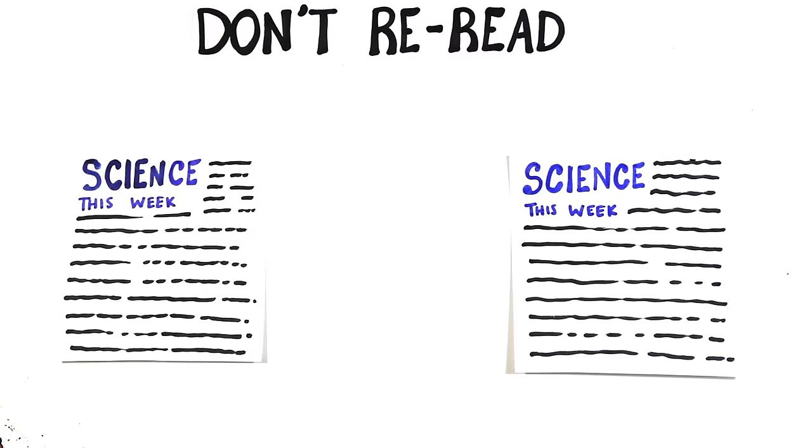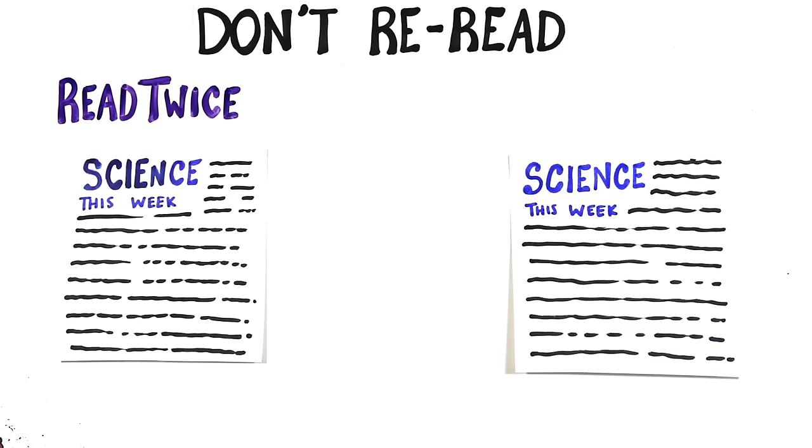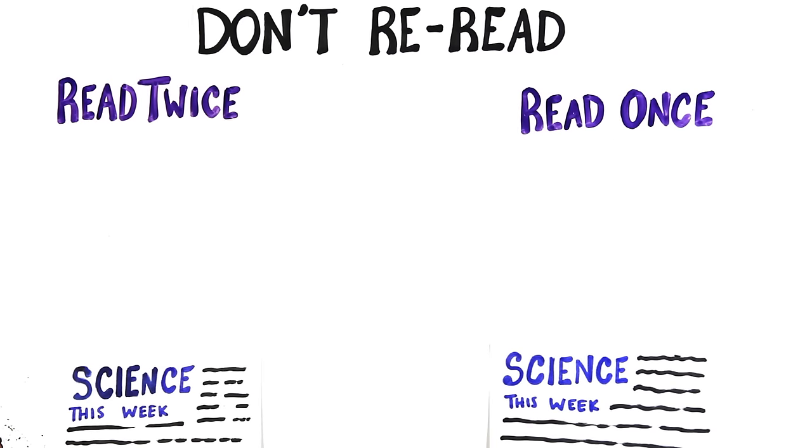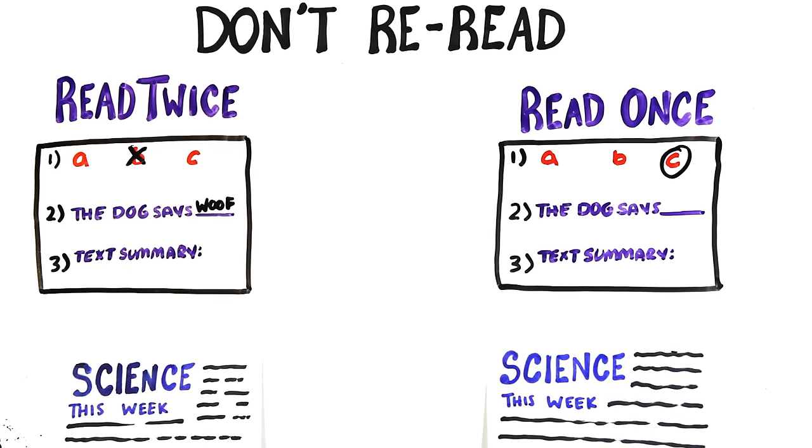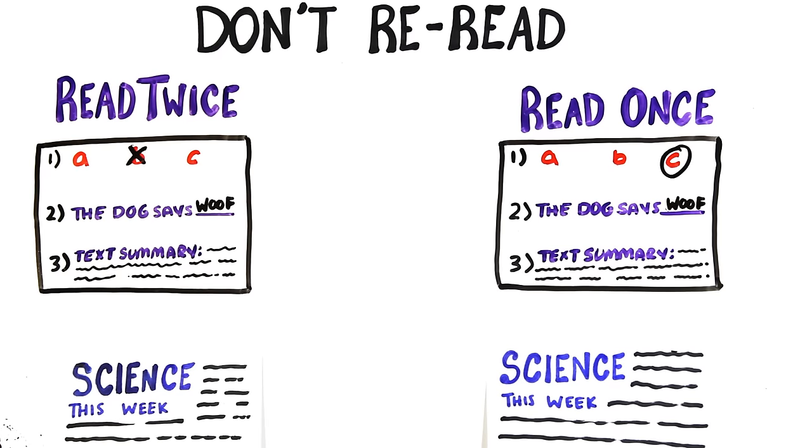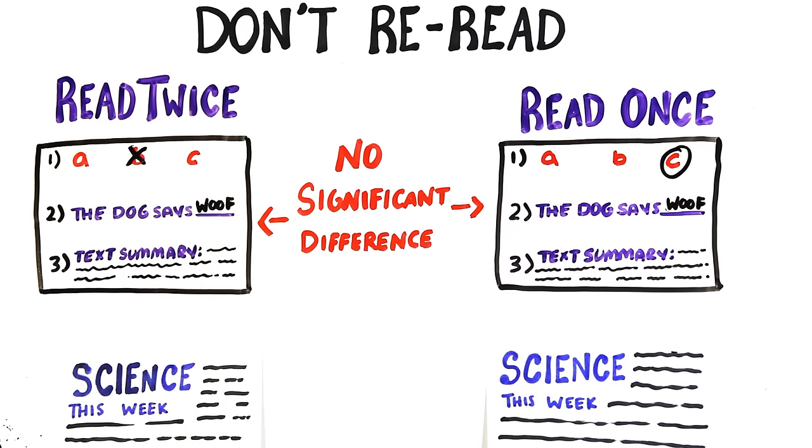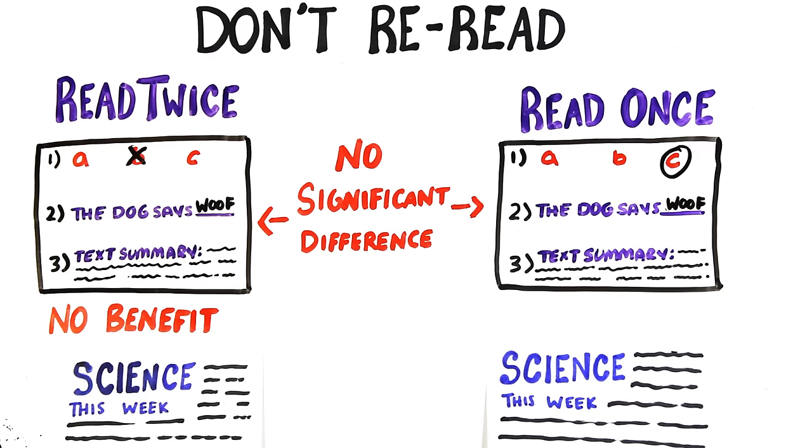A study had participants read an educational text. One group was then instructed to re-read the text a second time, where the other group only got to read it once. They were then tested through multiple choice, short answer questions, and text summaries to gauge their ability to retain the information. The experimenters found no significant differences in performance between the two groups, suggesting that re-reading provides no clear benefits.